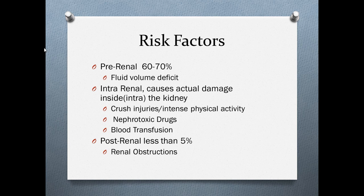The next risk factor is intra-renal failure, where there's actual damage to the inside of the kidneys. Nephrotoxic drugs cause intra-renal failure, such as lisinopril, atropine, Prozac, and SSRIs. Blood transfusions can also cause it — if you have a transfusion reaction, your body makes large amounts of the antigen-antibody complex, which damages the inside of the kidneys because those complexes are difficult to filter. Crush injuries or intense physical activity cause muscle breakdown that must be filtered through the kidney, and the kidney cannot filter all those muscle fibers, causing damage to the inside of the kidney.